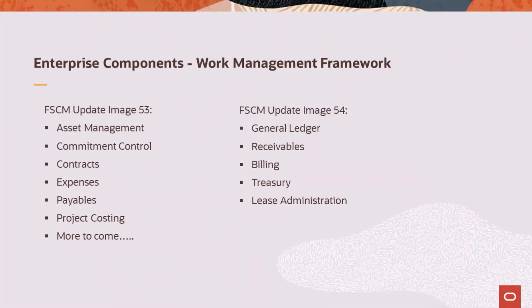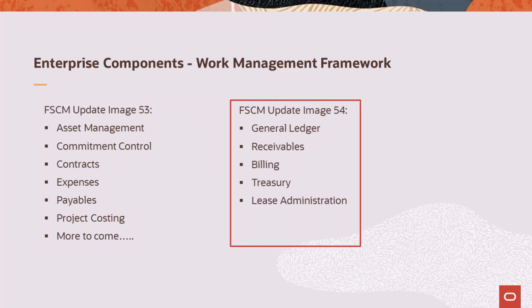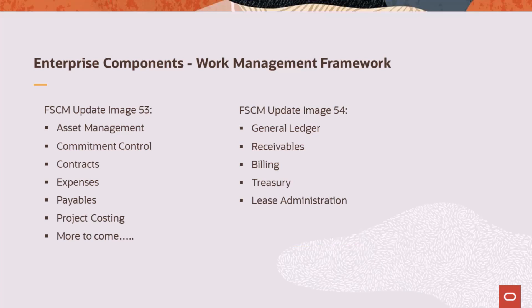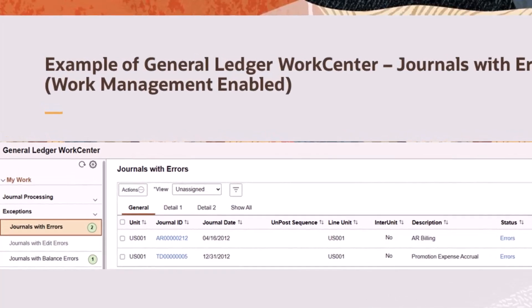PeopleSoft FSCM Update Image 53 introduced the Work Management Framework, which is an optional feature that is enabled for work centers. Update Image 54 delivers the Work Management Framework for five additional modules shown on the screen. Your organization decides whether to use this framework by configuring it for My Work transactions. The Work Management Framework enables you to view and manage transaction errors or warnings when they appear in the My Work section of a work center. Some transactions fall off this list through the natural progression of a business process within the system.